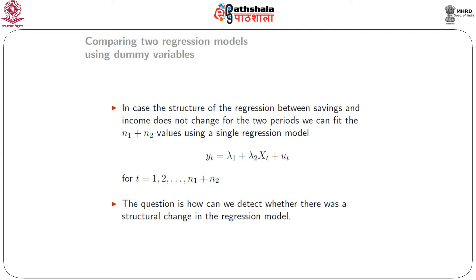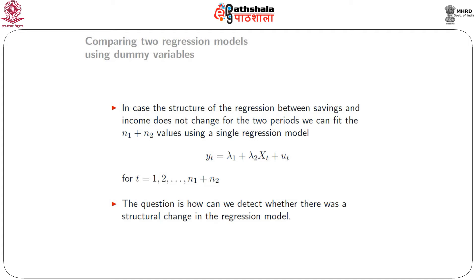One popularly used test is the Chow test. Before looking at its steps, let me give the two underlying assumptions. The first assumption is that u₁_t ~ N(0, σ²) and u₂_t ~ N(0, σ²), meaning both error terms are normally distributed with the same variance — in other words, the error terms are homoscedastic. The second assumption is that u₁_t and u₂_t are independently distributed.